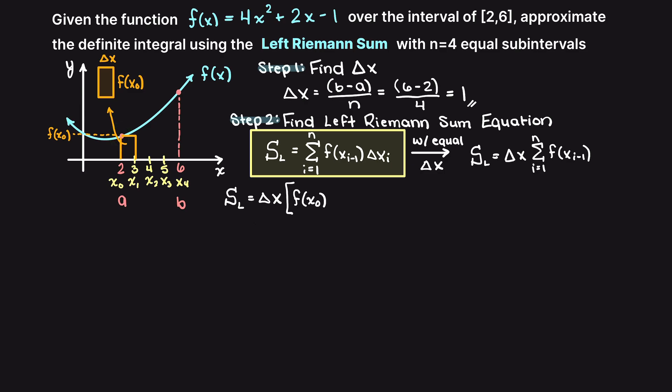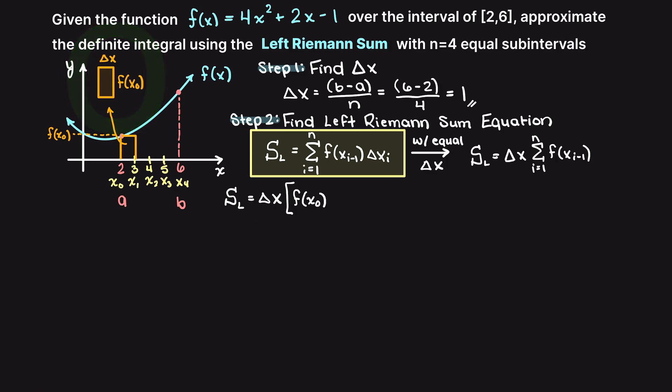So if we were to expand this equation, we would have delta x times f of x, which is this rectangle shown here. Now, let's move on to when i is equal to 2. Therefore, we add f of x1, and correspond that on the graph like so. Then we can continue this trend for our next two terms until i equals 4, then we stop.